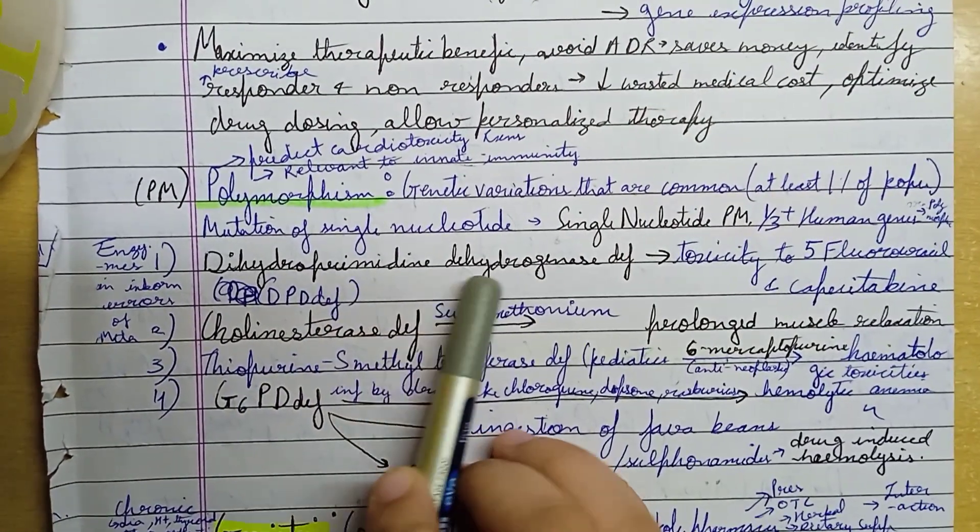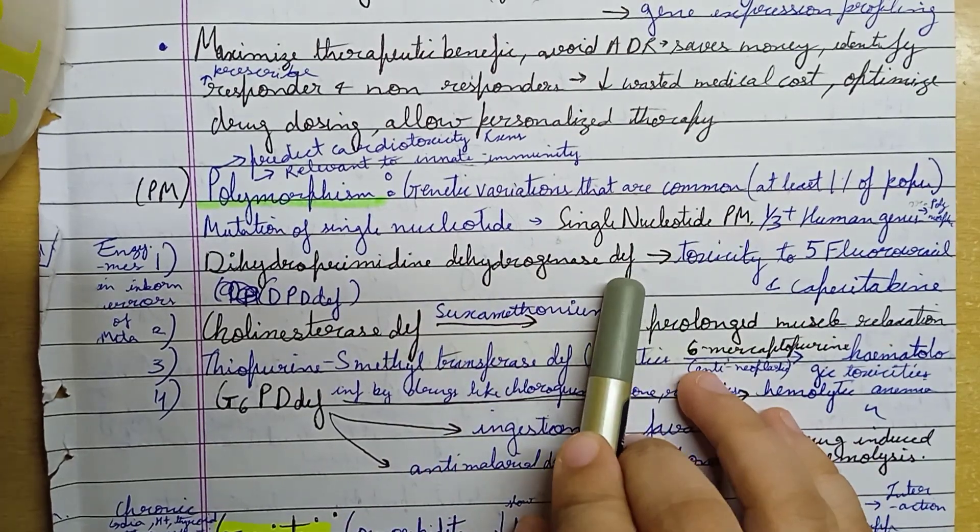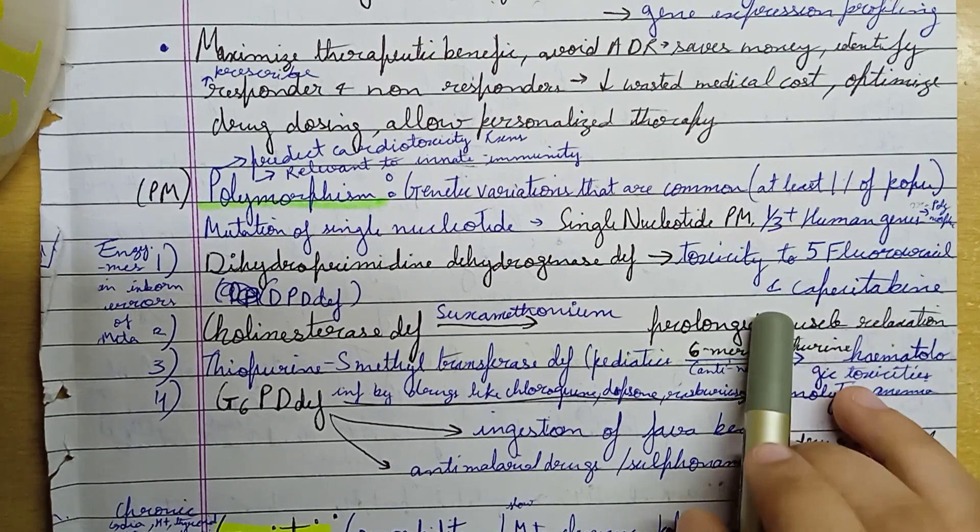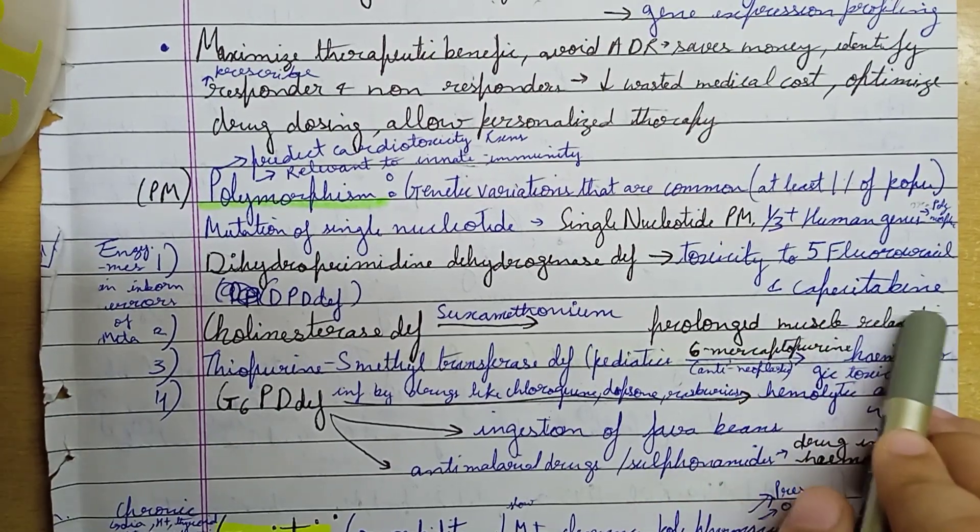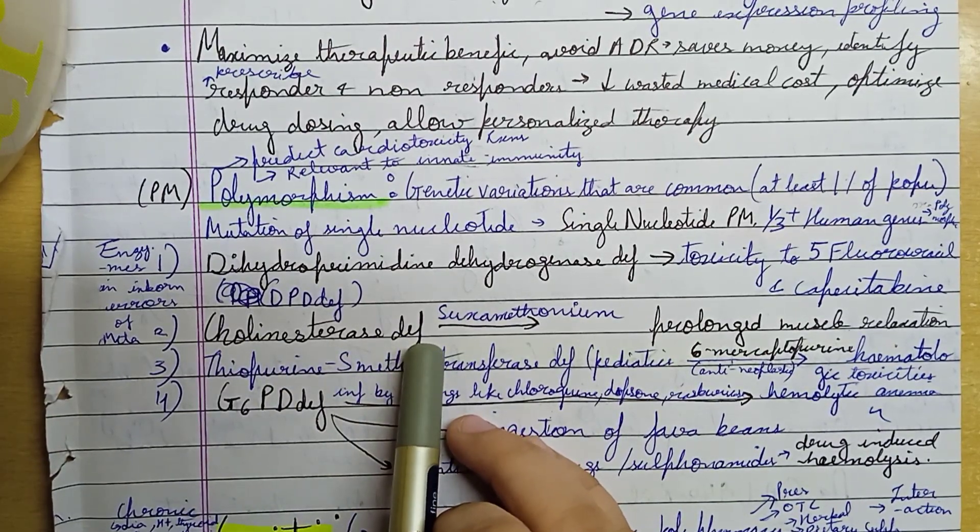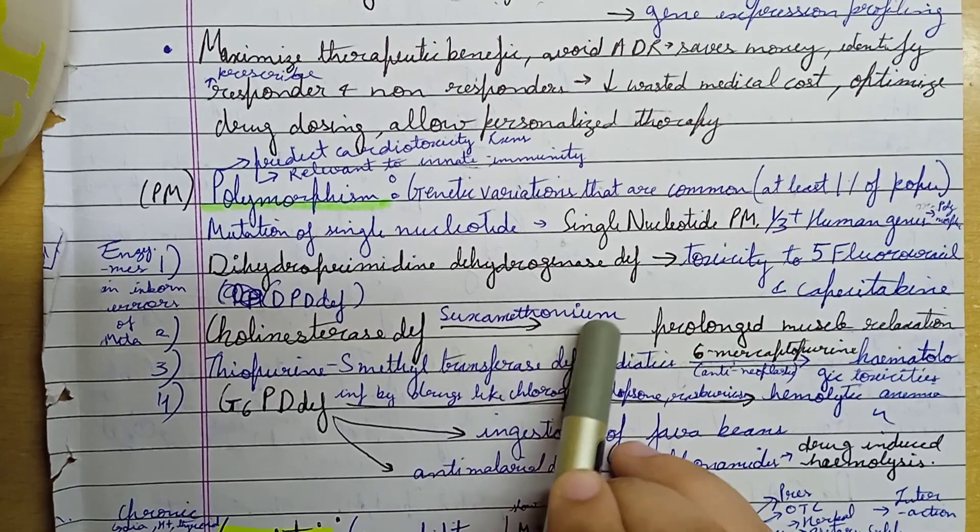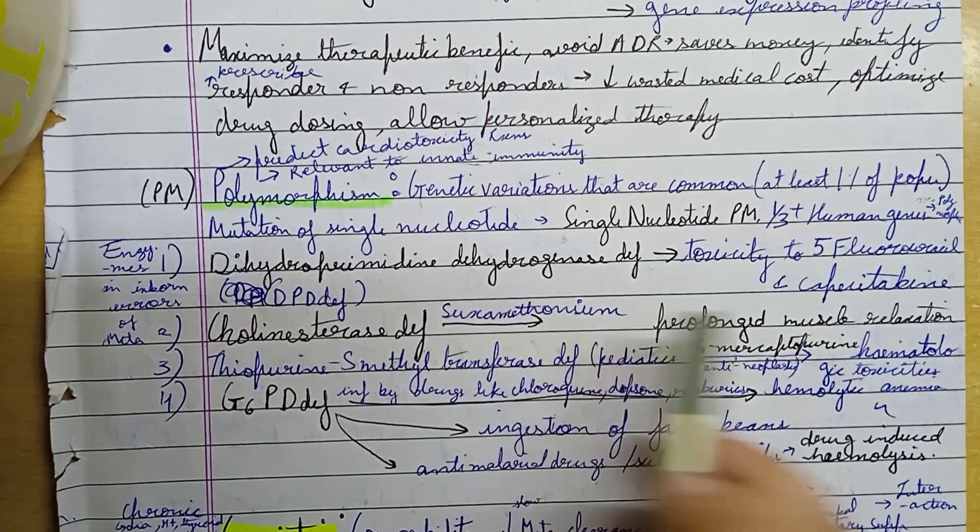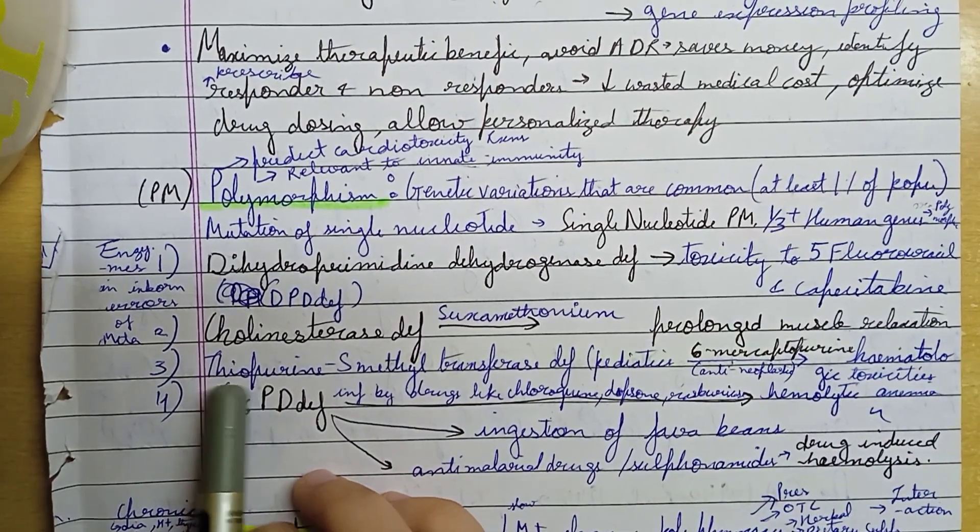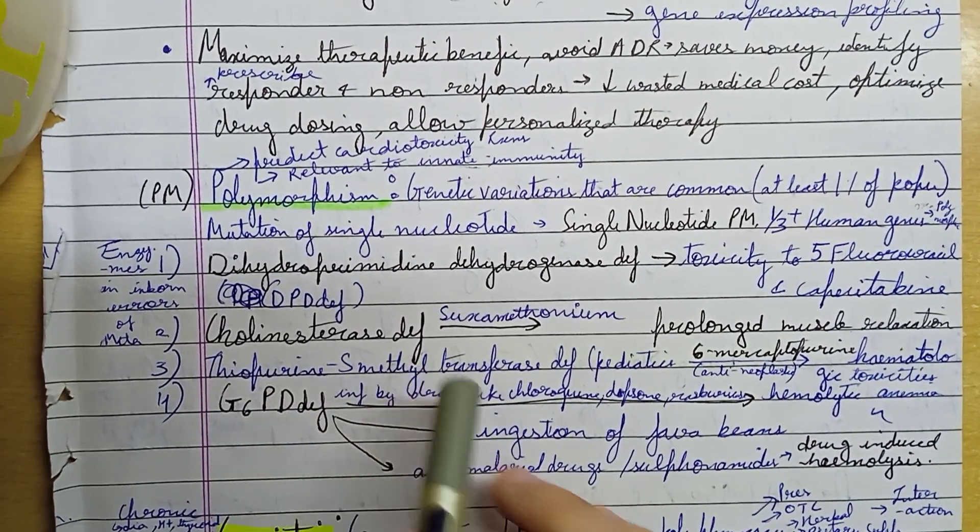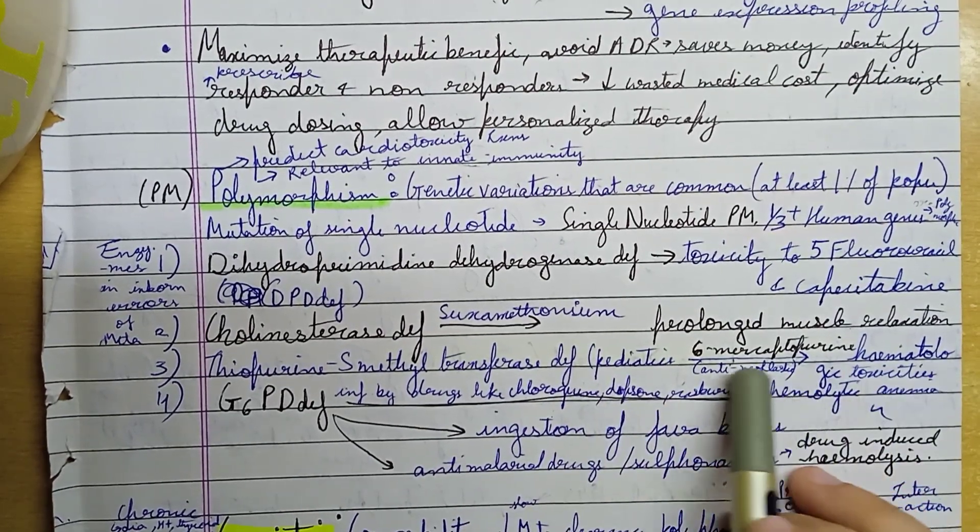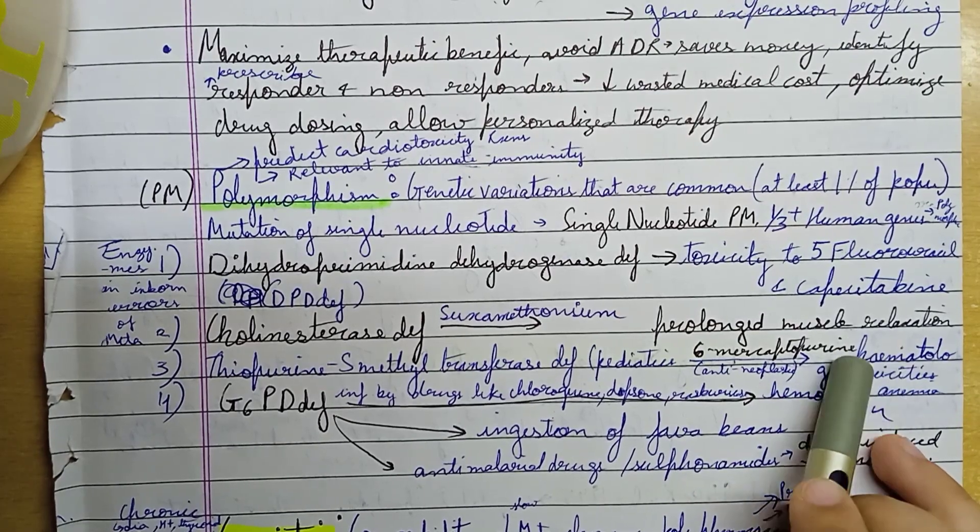We can predict thiopurine methyltransferase deficiency in pediatrics when giving 6-mercaptopurine, an anti-neoplastic agent, which causes hematologic toxicity.